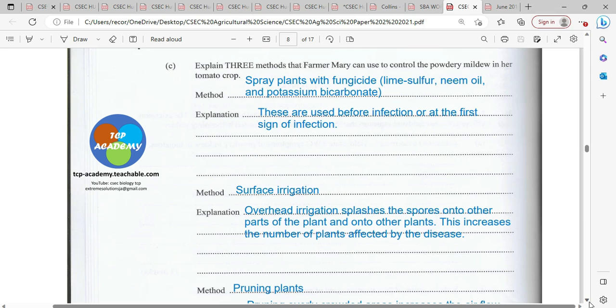Another method is surface irrigation. Explanation: Overhead irrigation will splash the spores onto other parts of the plant and onto other plants. This increases the number of plants affected by the disease. So once you're suffering from powdery mildew, you really don't want to have any overhead irrigation.